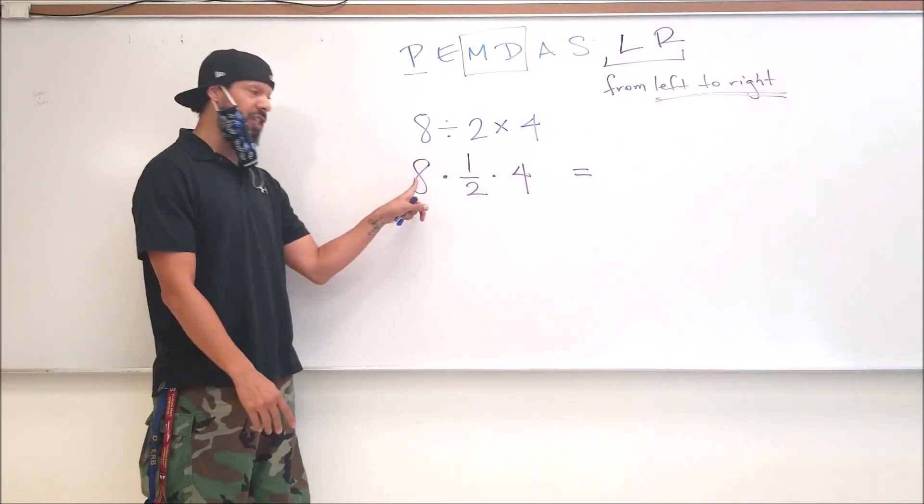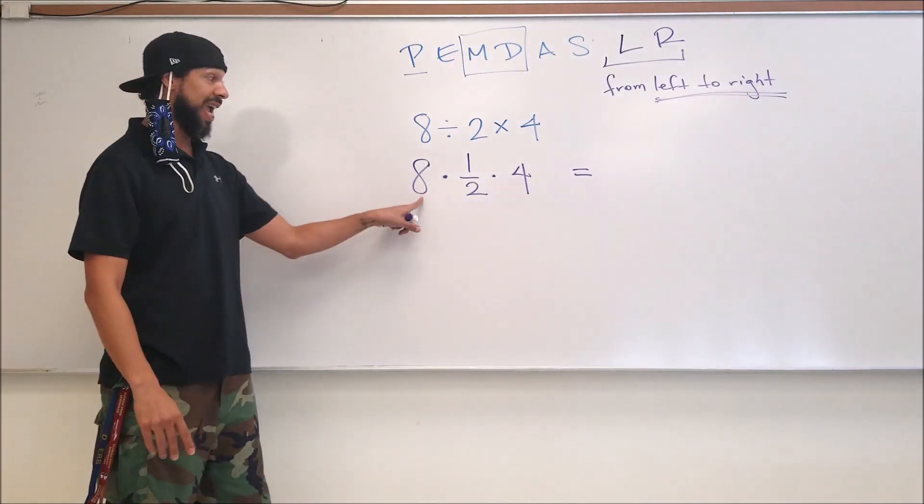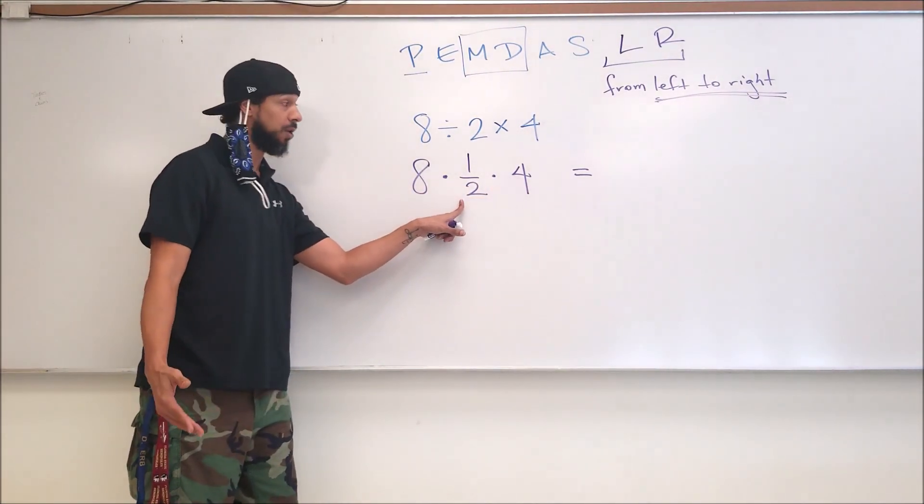What's eight times one half? Now this is all multiplication, so shouldn't I do it from left to right? All right. Eight times one half? Four. Four times four? Sixteen.